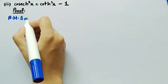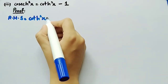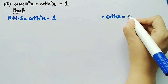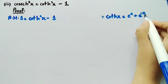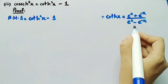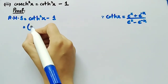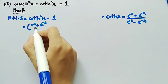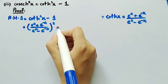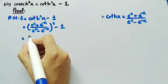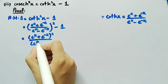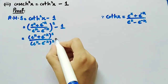The right hand side is equal to cot hyperbolic square x minus 1. We know that cot hyperbolic x is equal to e raised to power x plus e raised to power minus x, divided by e raised to power x minus e raised to power minus x. We substitute this value and get e raised to power x plus e raised to power minus x divided by e raised to power x minus e raised to power minus x, whole square minus 1. This can be written as e raised to power x plus e raised to power minus x whole square, divided by e raised to power x minus e raised to power minus x whole square, minus 1.